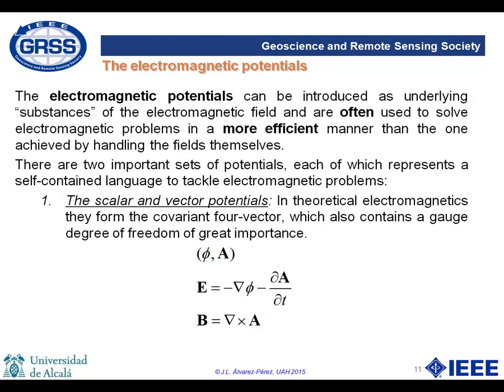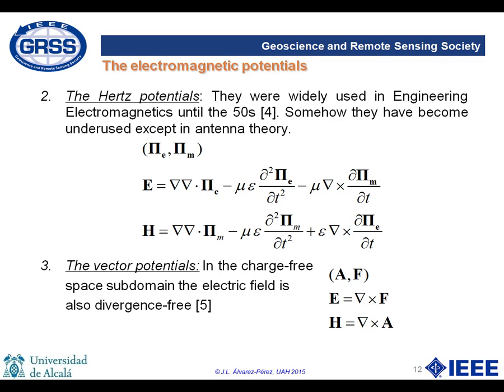It is important to bring in the electromagnetic potentials, often used in replacement of the electromagnetic fields, since they greatly simplify the problem. The most well-known potentials are the electric scalar potential phi and the magnetic vector potential A. There are also other interesting pairs of potentials such as the Hertz vector potentials, which were the standard way of solving electromagnetic engineering problems until the fifties. There is another pair comprising the standard magnetic vector potential A and the electric vector potential F, which exists only when the density of charge is zero. The introduction of F makes it possible to get a more symmetrical treatment of the electrical and magnetic parts of the field.